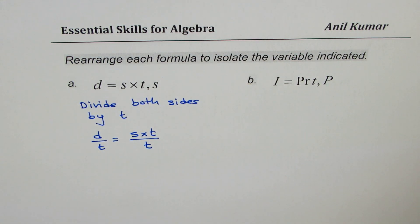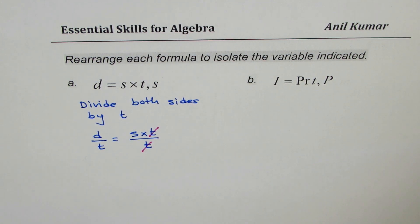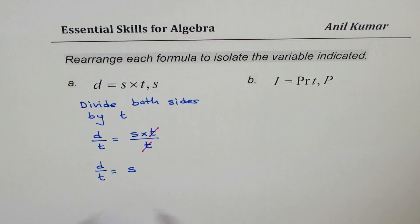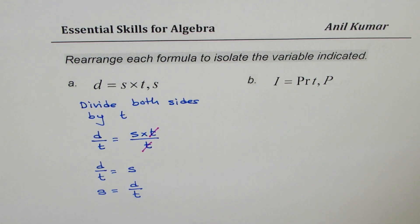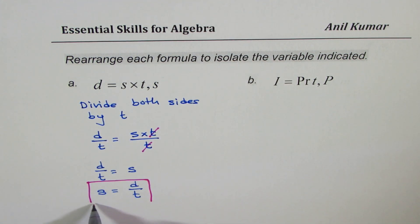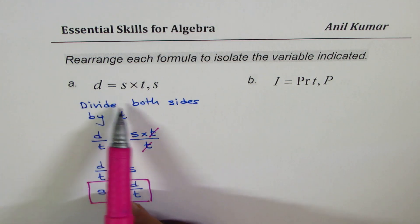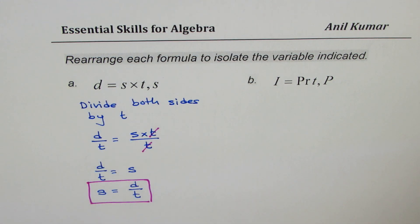As you can see, we can simplify: t divided by t is 1. So we can write d/t = s. We have isolated s. So s equals distance d over time t. So when we say isolate a variable, we mean rearrange the formula so that you can find what s is directly.